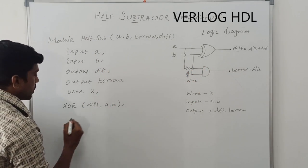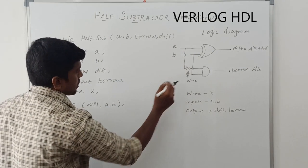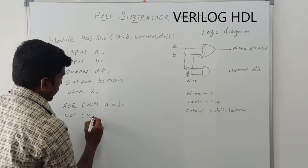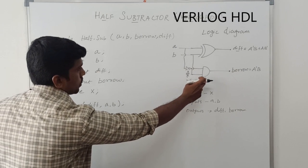The next one is NOT function. NOT function output says X. Input A. X comma A. Then, next we go to AND operation. AND.